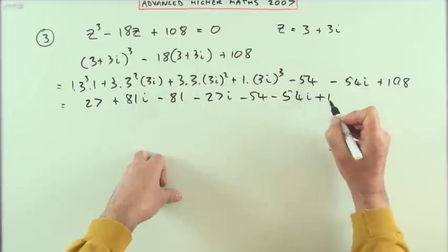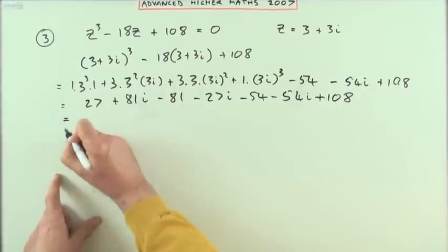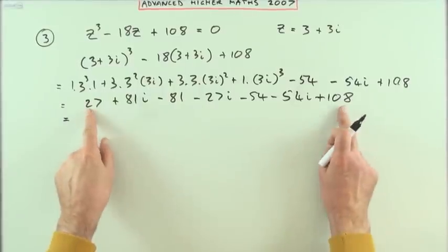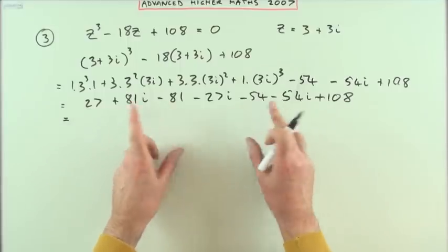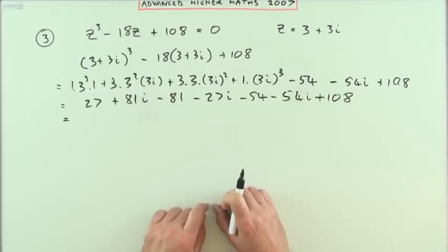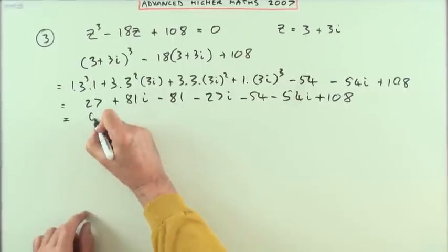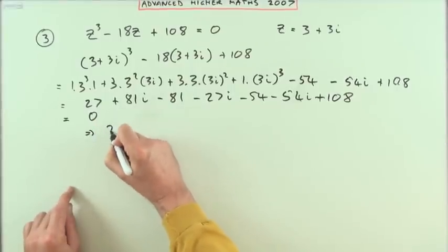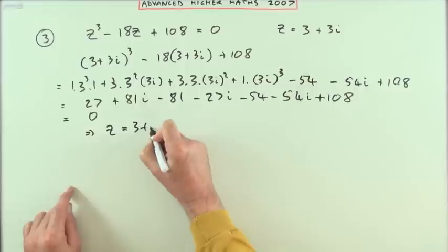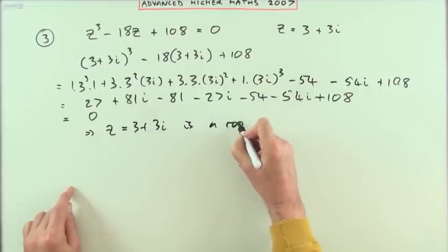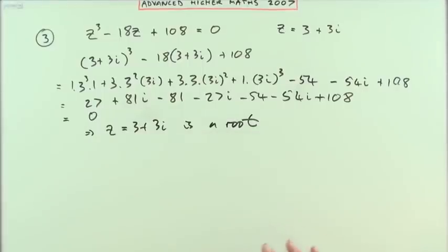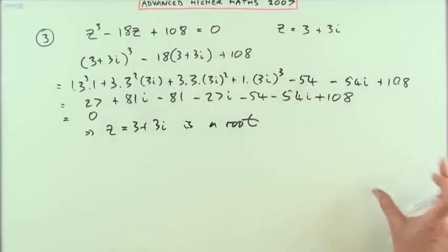So we get: 3³ = 27, then 81i, then 81×i² = −81, then −27i, minus 54, minus 54i, plus 108. Altogether the real parts: 135 − 135 = 0, and the imaginary parts: 81 − 27 − 54 = 0. So z equals 3+3i is indeed a root. Strictly speaking, that was the intention — show it's a root by showing it solves the equation, rather than assuming it's a root.